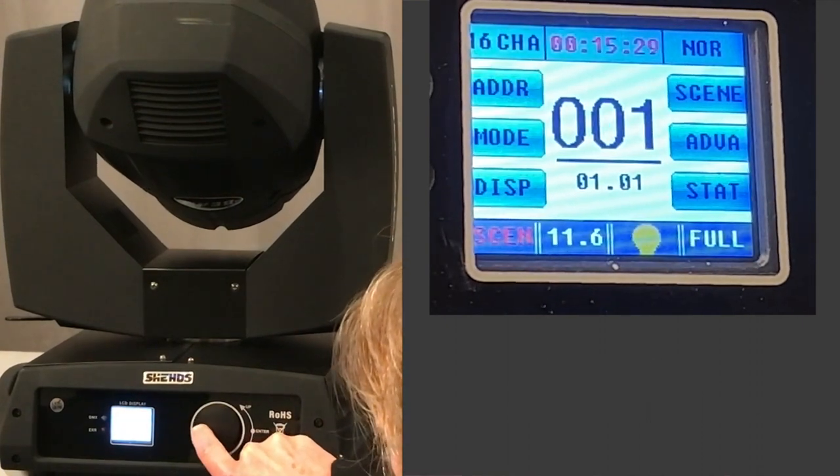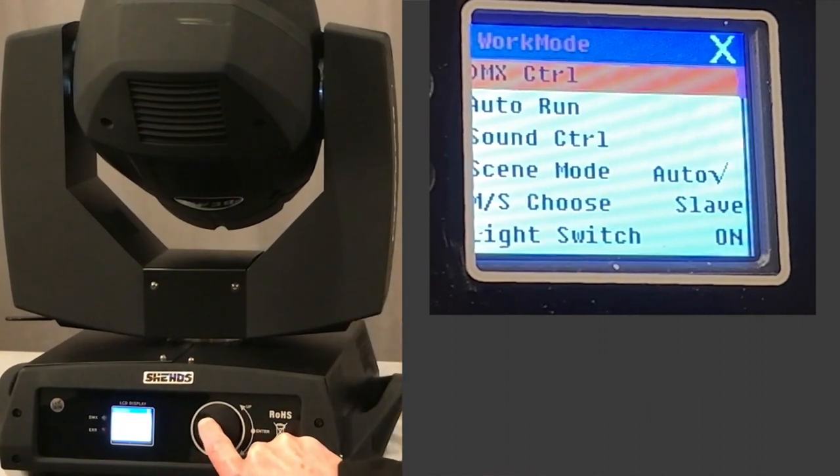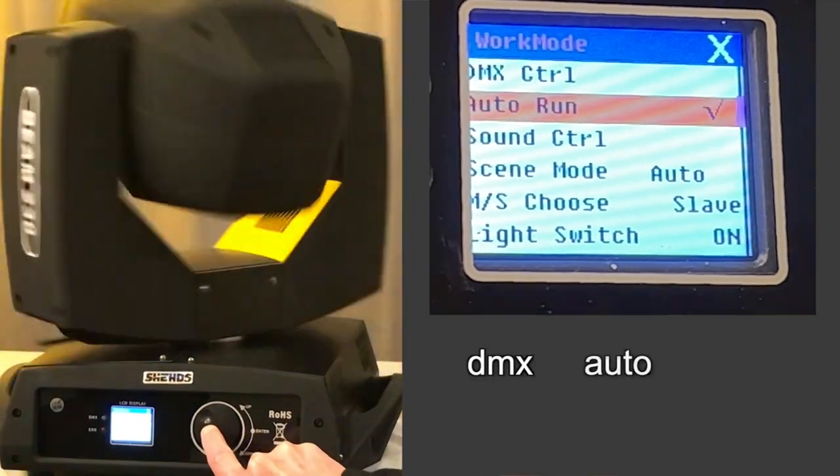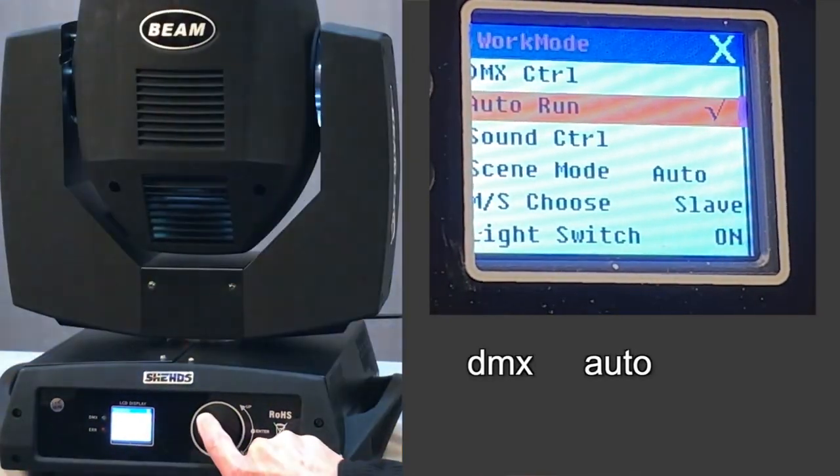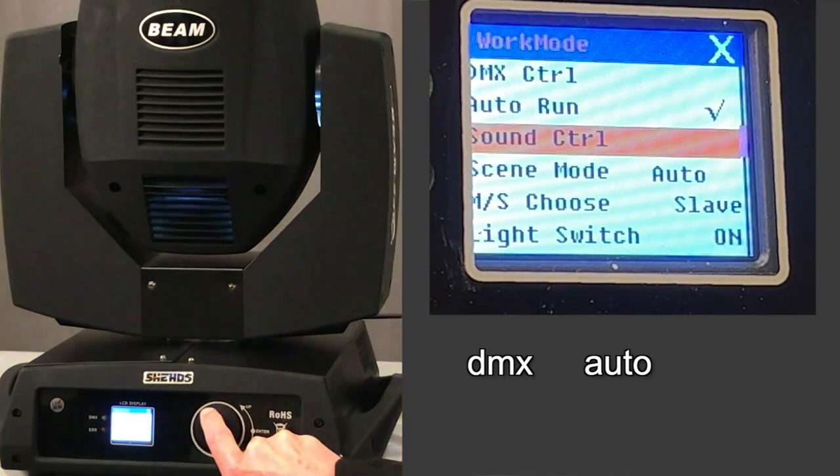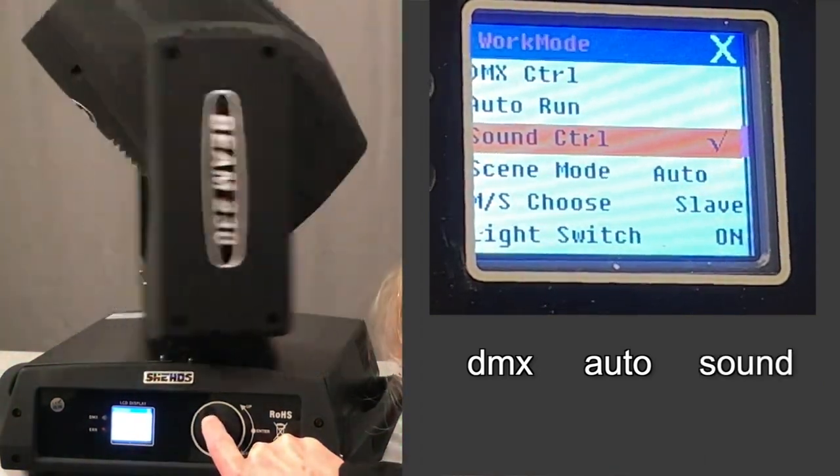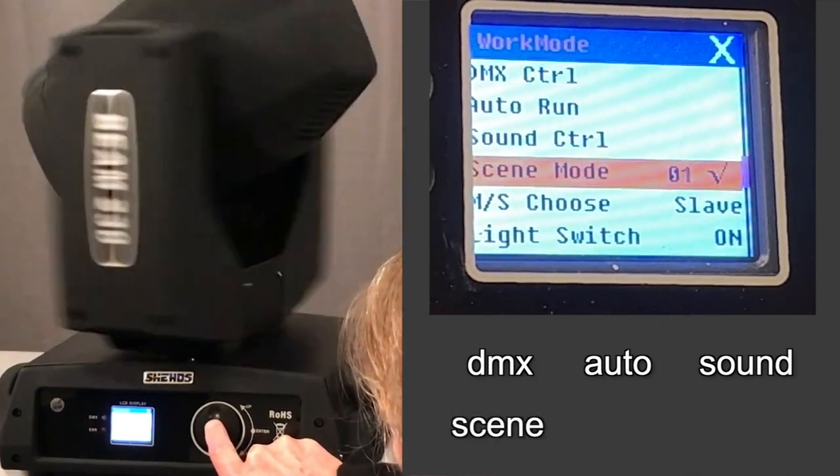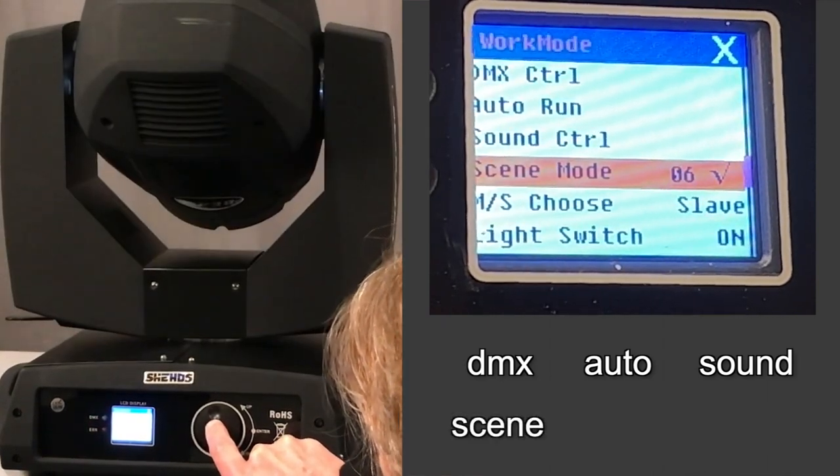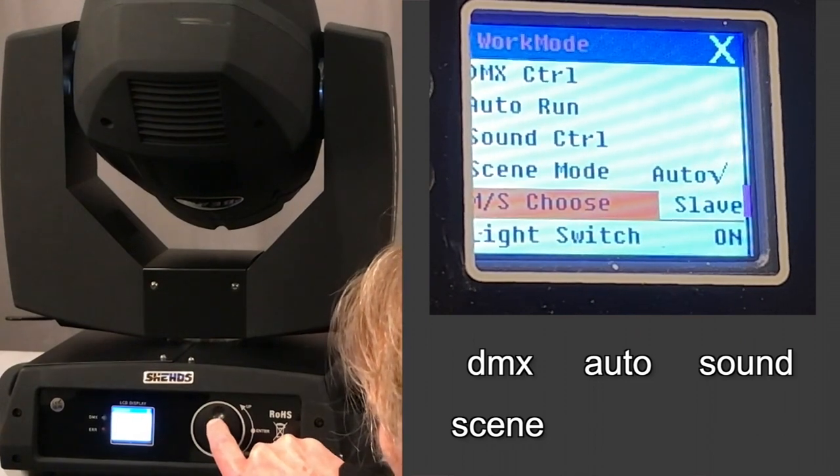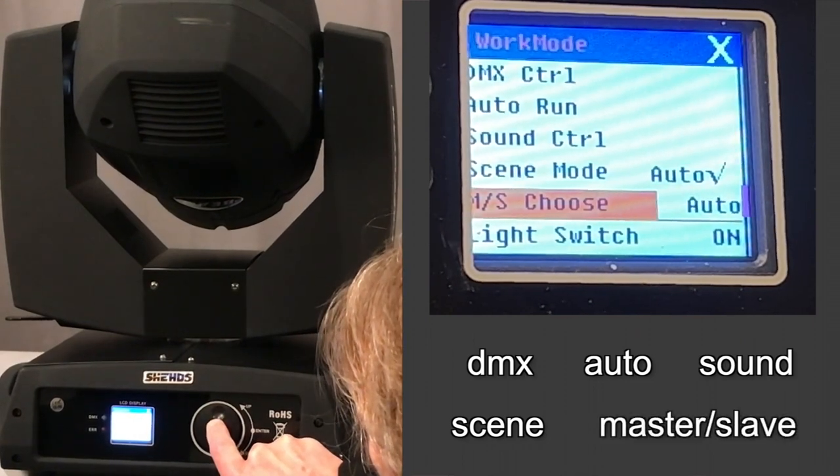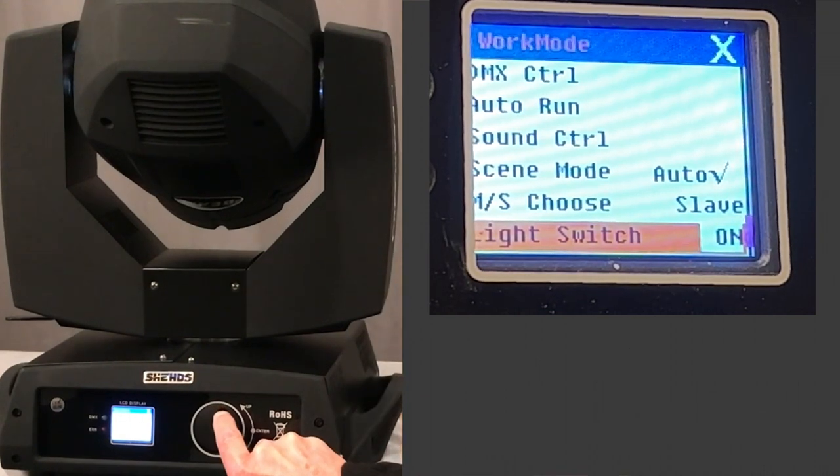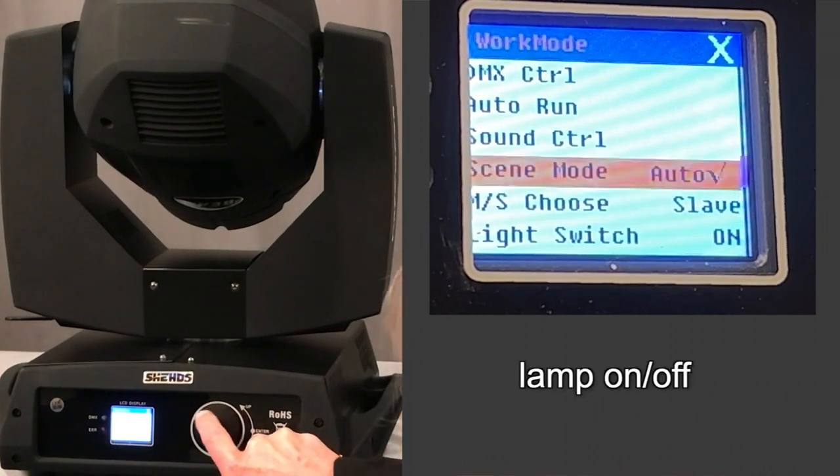In the next page, you can go into the different modes. It's in DMX mode now, but there's an auto mode, you can put it into a sound control mode. There's actually a variety of different scene modes. You can set it from master to auto to slave. And in this setting, you can turn the lamp on and off.